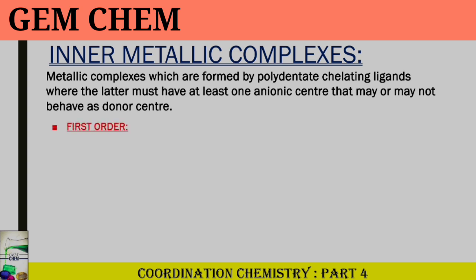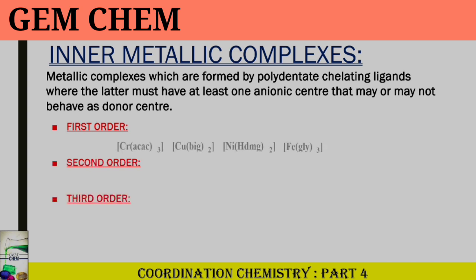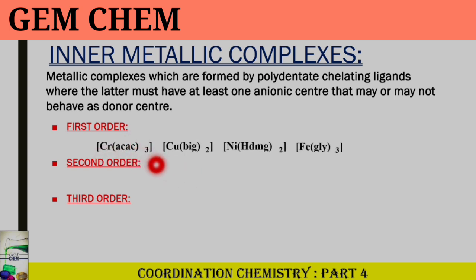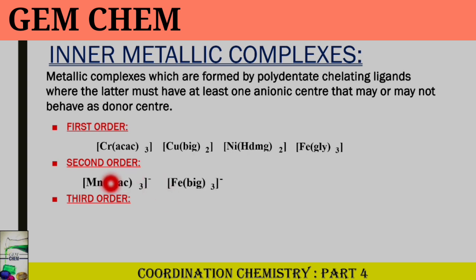The three classes are known as first order, second order, and third order. In the case of first order, examples include Cr(acac)₃, Cu(bipy)₂, Ni(HDMG)₂, and Ir(CO)₃. These are all neutral inner metallic complexes where the charge of the metal ion is fully satisfied by the polydentate anionic ligand.